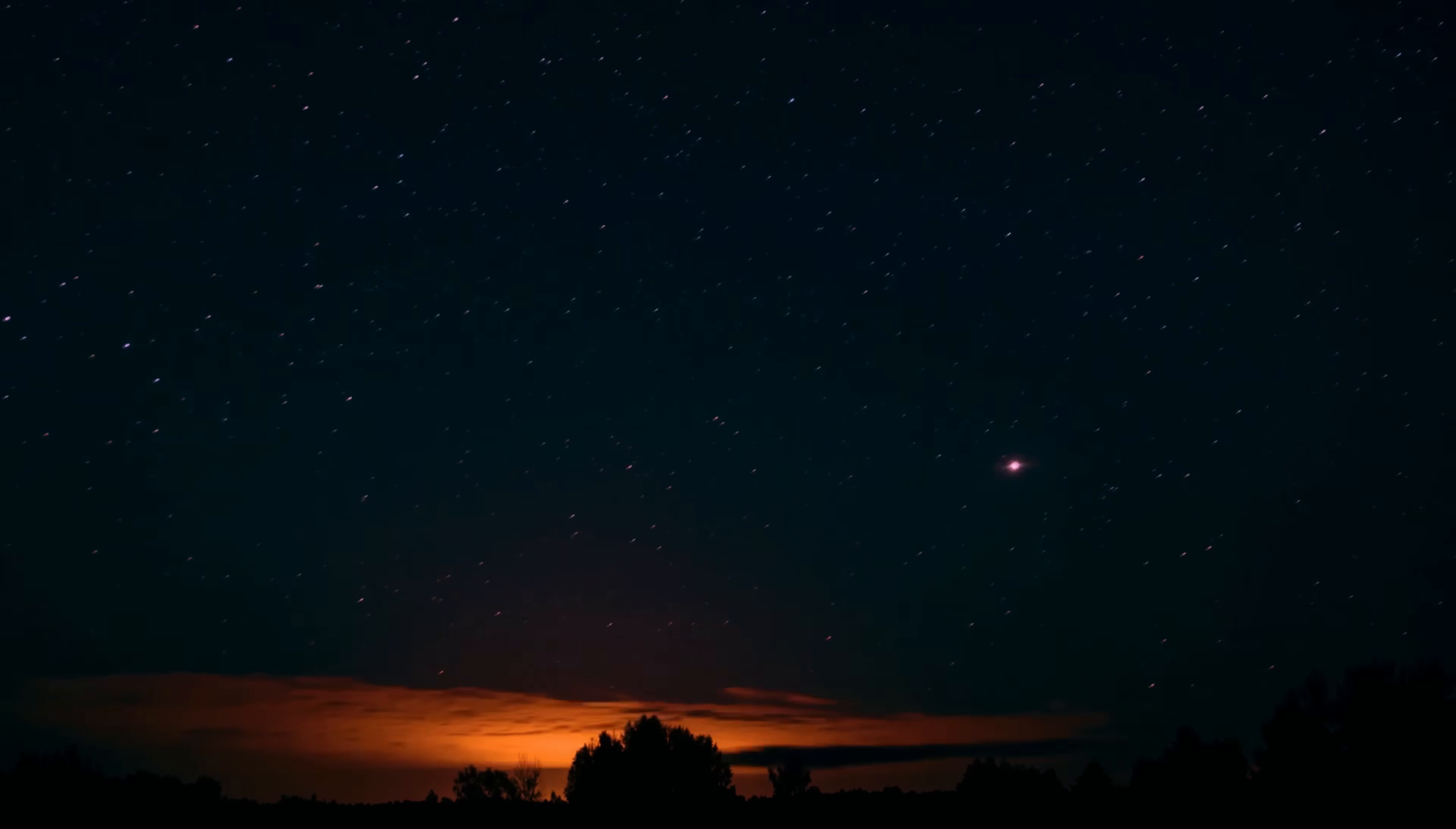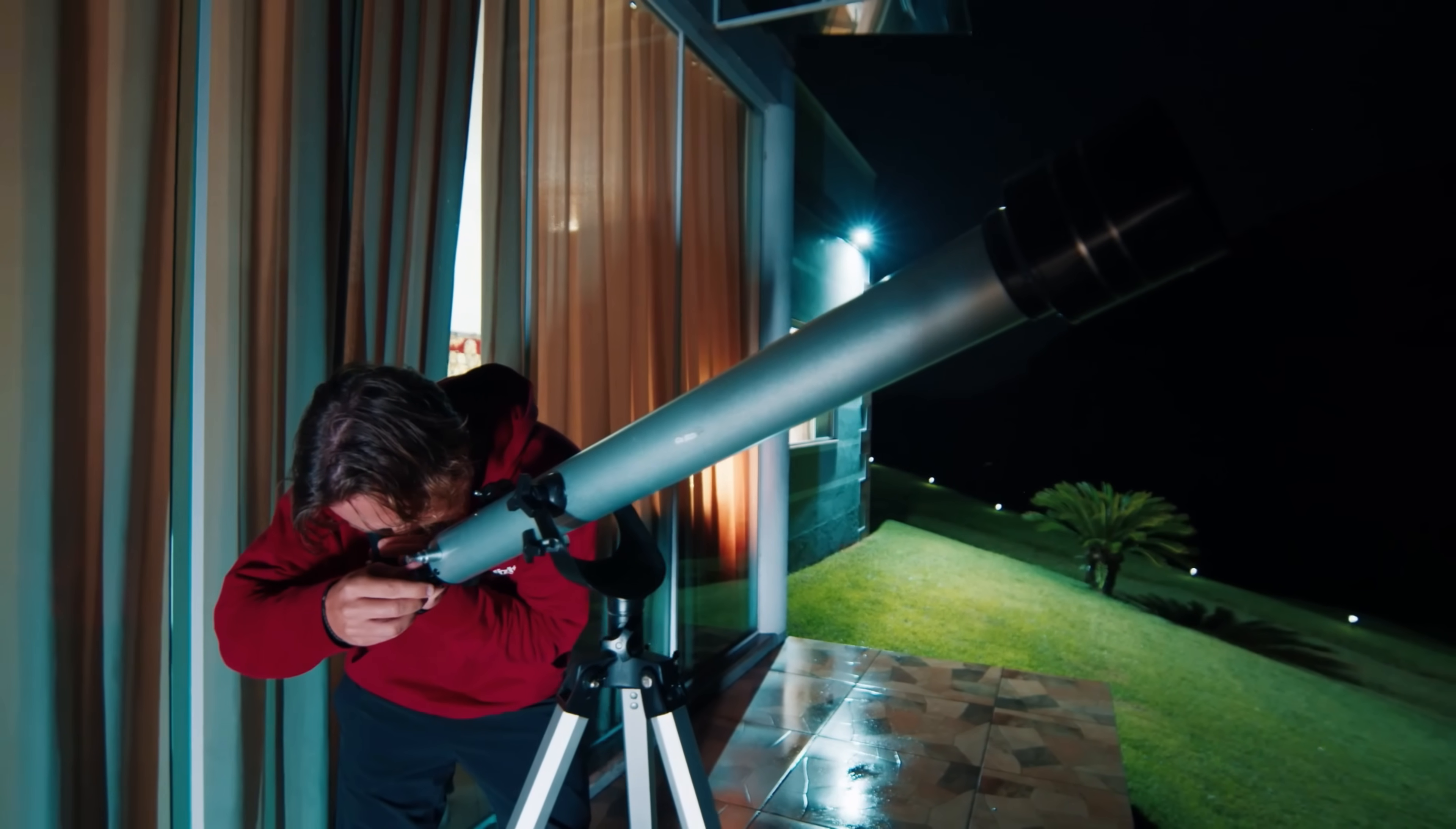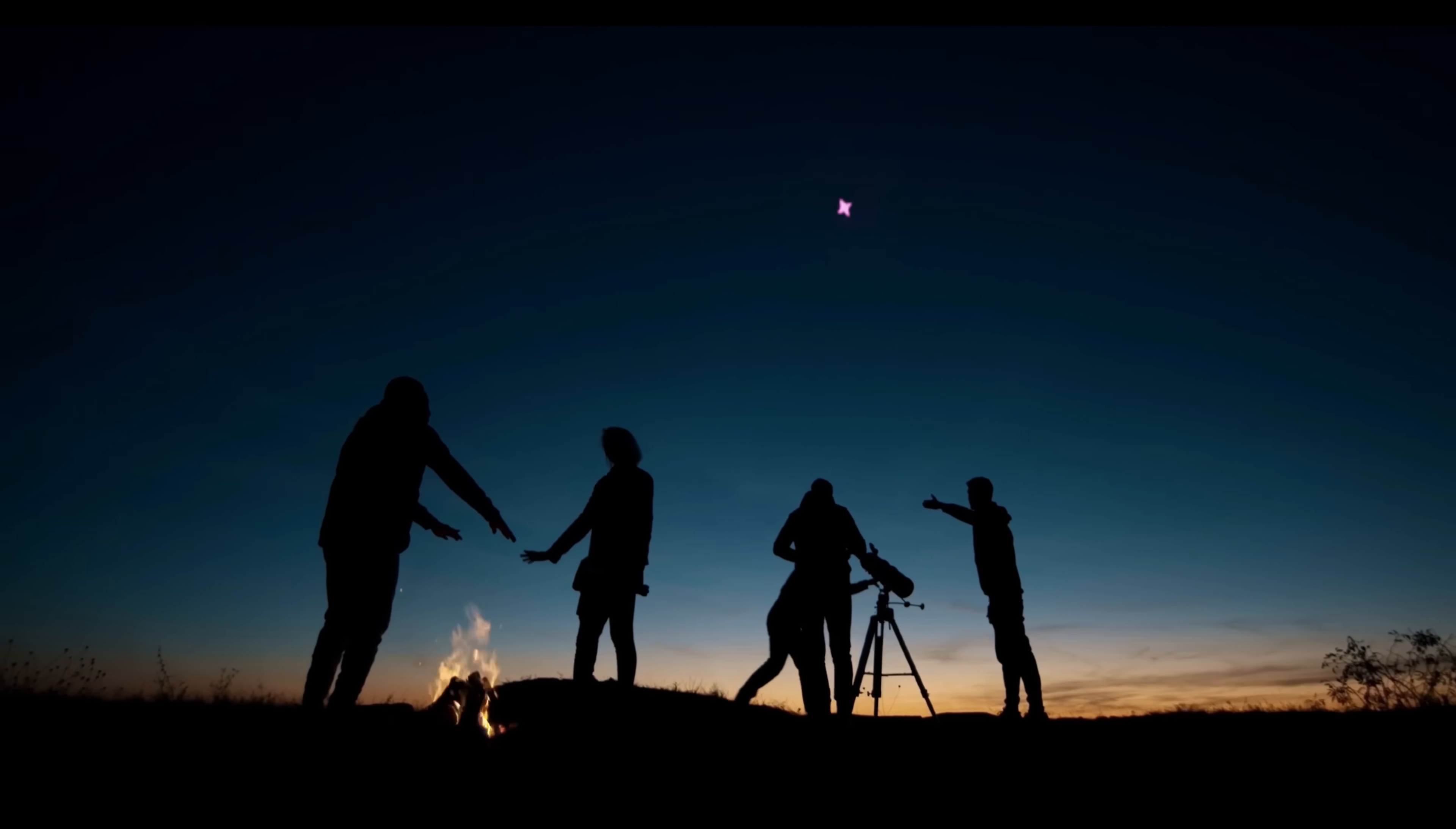Once T Coronae Borealis erupts, the peak brightness will be fleeting, lasting only a few hours. Within a week, the star will dim significantly, requiring binoculars to observe it. It's highly likely that an amateur astronomer will be the first to spot the eruption of the star and notify the professional astronomy community. During its peak brightness, the nova will be visible to the naked eye, though binoculars or a small telescope will offer a more detailed view. Despite not reaching the intensity of the brightest stars or planets, the nova will be a remarkable and memorable sight for sky watchers and amateur astronomers alike.